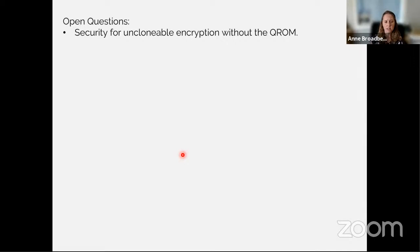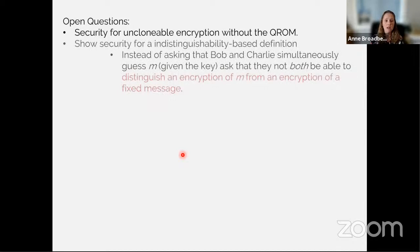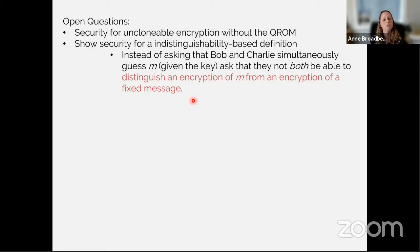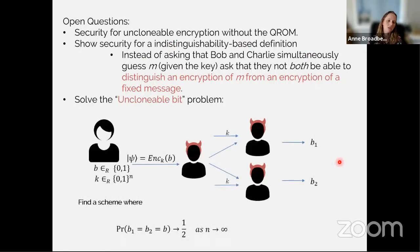Open questions on the unclonable encryption front: security of unclonable encryption without the QROM, and showing an indistinguishability-based definition. Instead of Bob and Charlie simultaneously guessing m for a random m, we'd want them to not both be able to distinguish an encryption of message m from an encryption of a fixed dummy message zero. This is similar to the certified deletion case. Ideally we want this indistinguishability-based definition, related to the unclonable bit problem: find a scheme encoding a single bit into a quantum encoding where the probability that all three bits b, b1, b2 are equal tends to one-half as n goes to infinity.